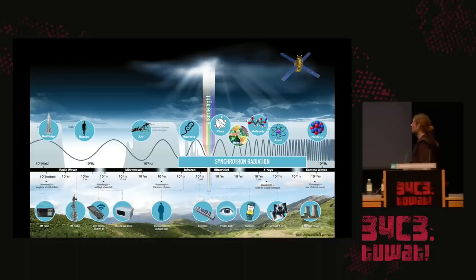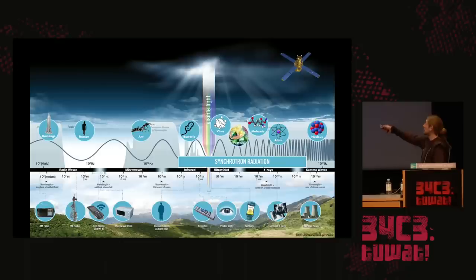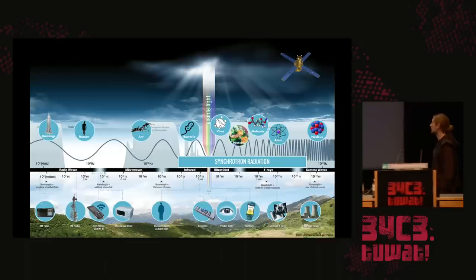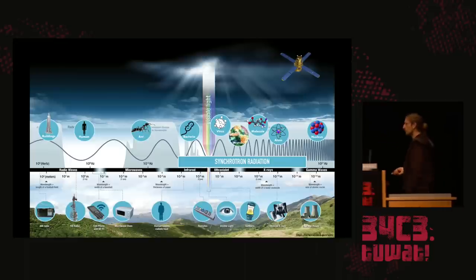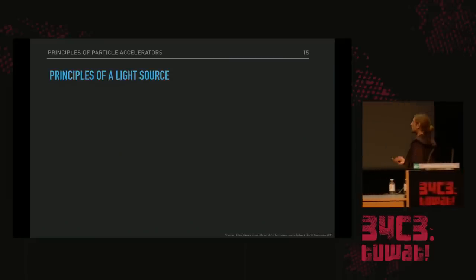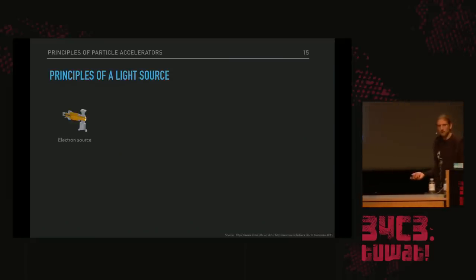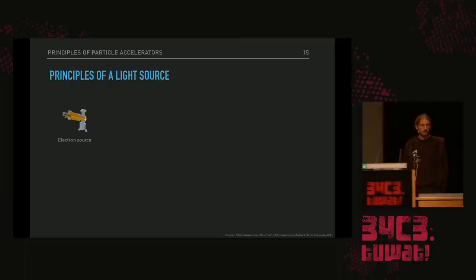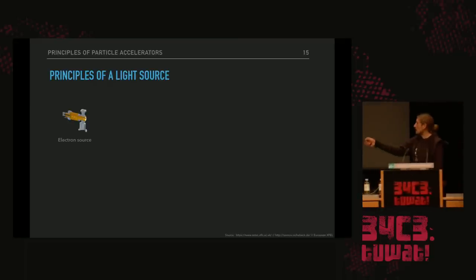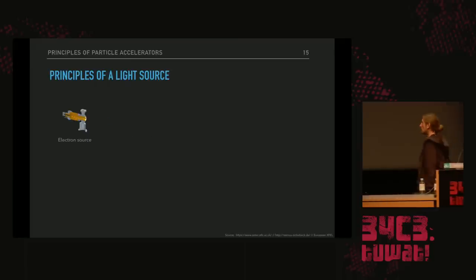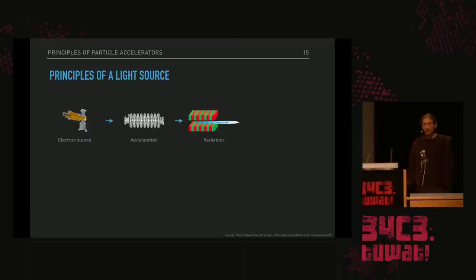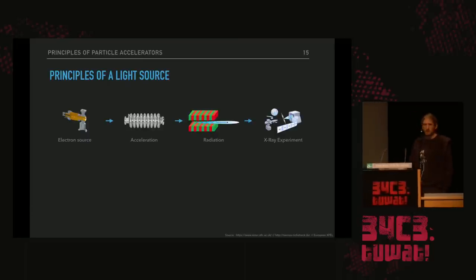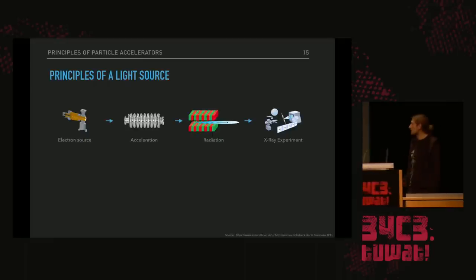Synchrotron radiation is very well suited to study small things like proteins or molecules. Now the question is how can we put this into technology? What are the principles of a light source? First, we have to generate electrons — we need an electron source. Then we need something to increase their energy. Finally we need a device to make them radiate, and with this radiation we can perform our X-ray experiments. It's as simple as that. It's not too ambitious to think of such a light source as a radio station: you have your input signal, then high power amplification, and then you put this signal through a device which produces electromagnetic radiation, of which only a tiny fraction hits your receiver.